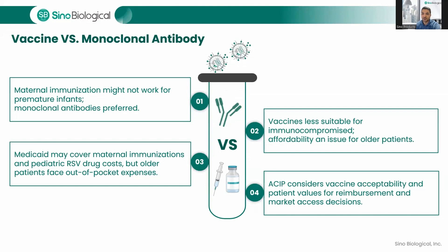In cases of premature birth, healthcare providers may give preferential recommendations to monoclonal antibodies. Similarly, vaccines may be less suitable for immunocompromised individuals. While immunization and some pediatric RSV drug costs are expected to be covered by Medicaid, which finances over 40% of births in the U.S. — especially considering the 2022 Inflation Reduction Act — for older people, without new legislation affirming the importance of RSV vaccination, vaccines would likely require significant out-of-pocket expenses. Such factors may be considered by the CDC Advisory Committee on Immunization Practices (ACIP) in their decision-making process for reimbursement and market access.